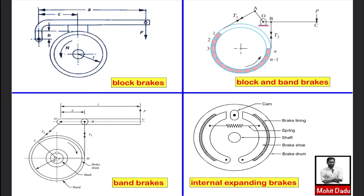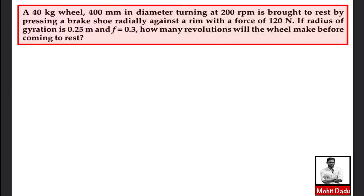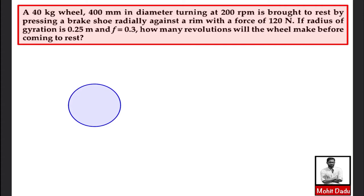We'll understand the energy equations through a simple numerical problem: A 40 kg wheel, 400 mm in diameter, turning at 200 rpm is brought to rest by pressing a brake shoe radially against its rim with a force of 120 N. The radius of gyration is 0.25 m and coefficient of friction is 0.3. How many revolutions will the wheel make before coming to rest?